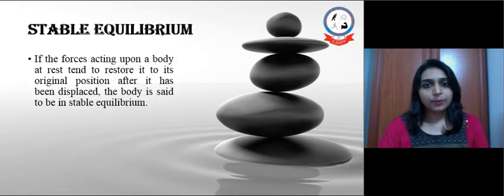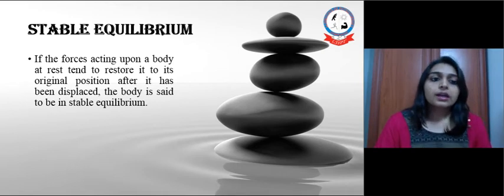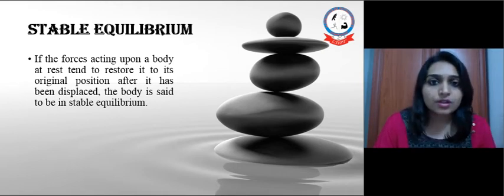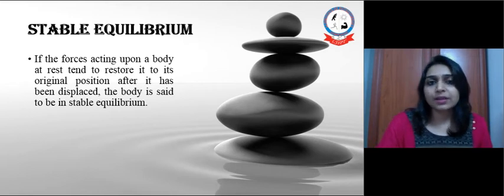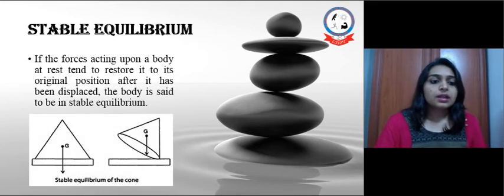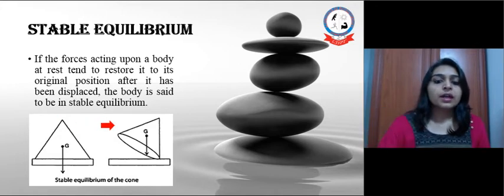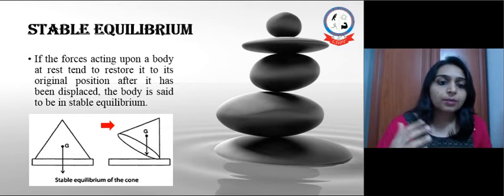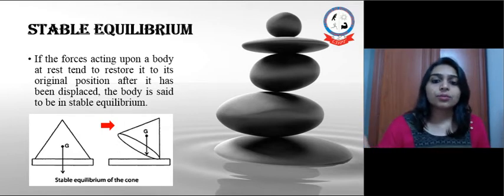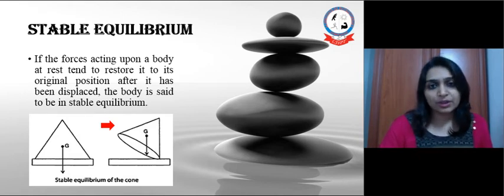Stable equilibrium: If the force acting upon a body at rest tends to restore its original position after it has been displaced, then it is known as stable equilibrium. For example, if a cone is placed in this way and we apply a force on it, there will be some change in the position. But that body is going to assume at the end the same original position, then the body is said to be in stable equilibrium.